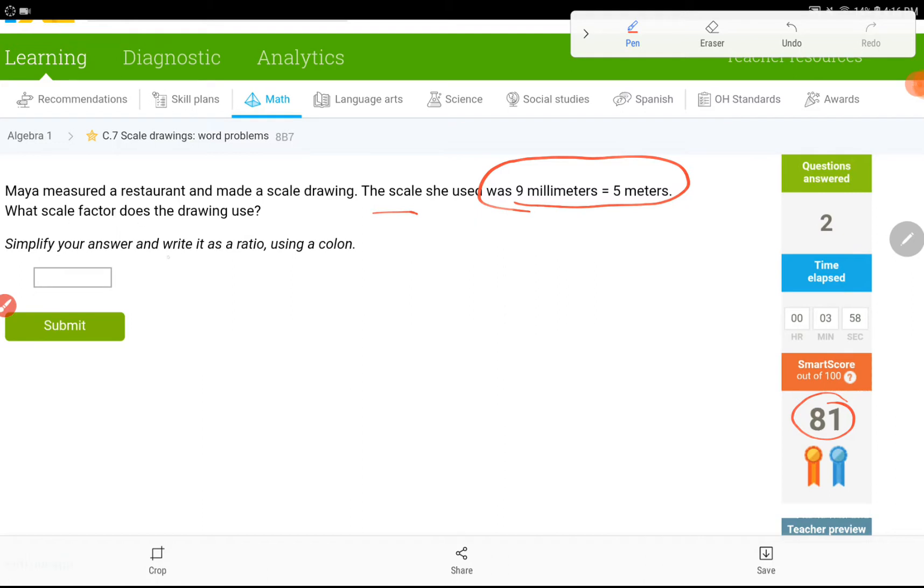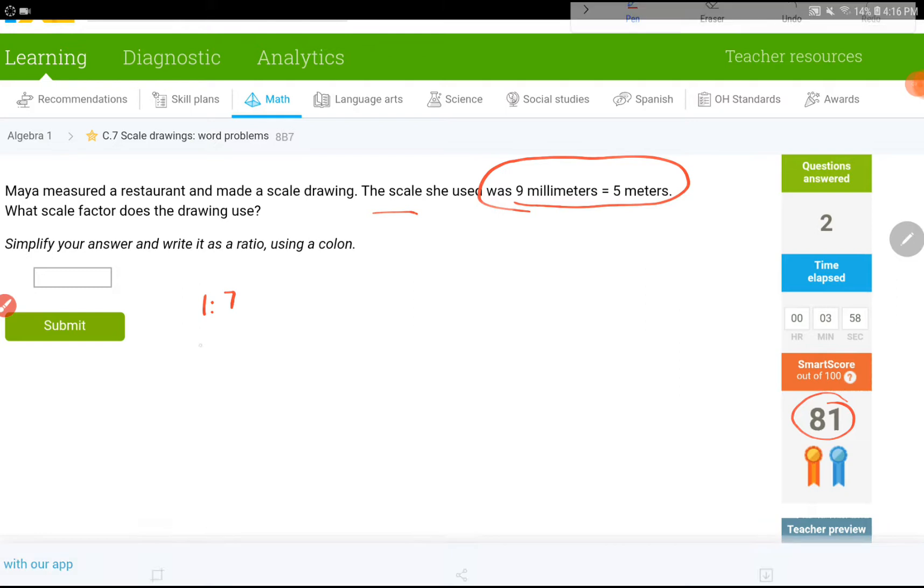Simplify your answer and write it as a ratio using a colon. So, this is the kind of thing that I am going to write like 1 to 1,000 or like 3 to 500. These are just examples.